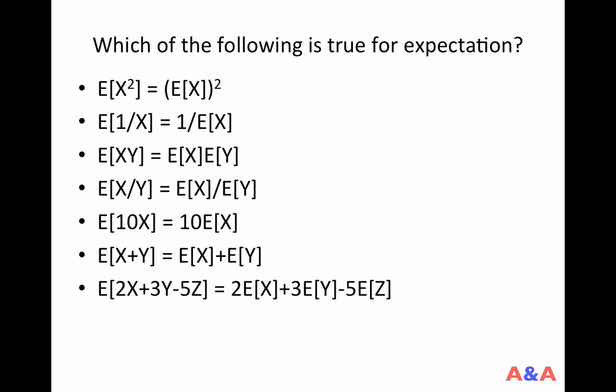The first four expressions are not true in general. For example, the first expression says that the expectation of the square of a random variable is equal to the square of the expectation of that random variable — which is not true in general.